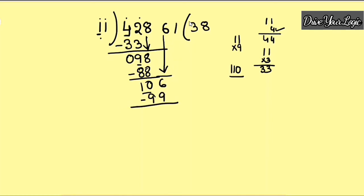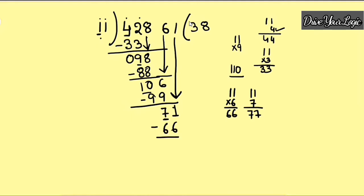So the next digit of the quotient is 9. Now bring the next digit down: you have 71. The last digit is 1 and the divisor ends in 1. Don't take 7 — because 77 is too large. Take the number before: 6. 11 into 6 is 66. 71 minus 66 is 5. So the remainder is 5. Very easy process — this is how you do long division. Your quotient is 78 with remainder 5.